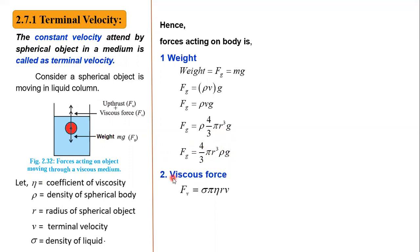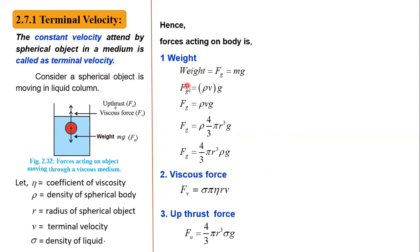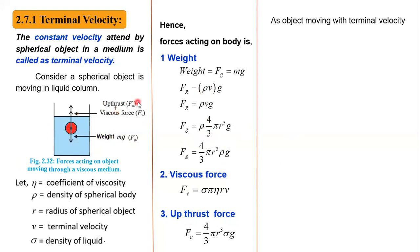The second force is the viscous force. The upthrush force is exerted by the liquid. We calculate it the same way as weight: upthrush force equals 4/3 pi r cubed sigma times g, where instead of rho we use sigma, the density of the liquid, since this force is experienced by the object due to the displaced liquid.